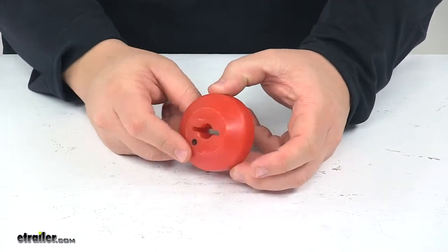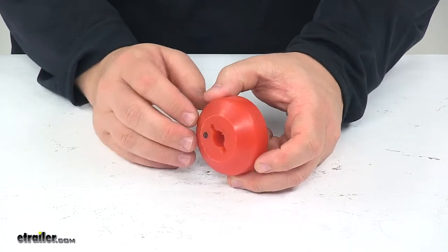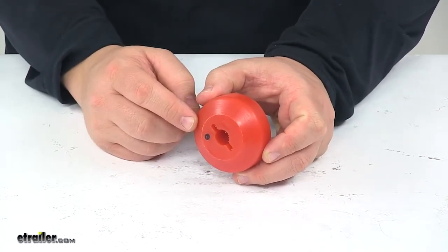When it comes to the construction, we're looking at a polyurethane construction. It's designed to last a long time, resist crumbling and decay and this one's red in color.